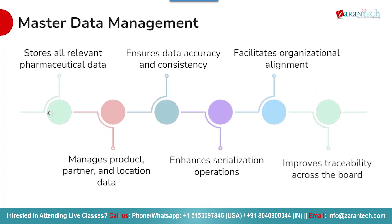Next is master data management. Effective master data management is foundational for the success of track and trace processes. SAP ATTP includes master data governance tools to maintain high-quality data for products, equipment, business partners, and locations — all critical for serialization and traceability. Centralized master data ensures consistency and accuracy across all systems and processes, aligning the entire organization around a single source of truth.